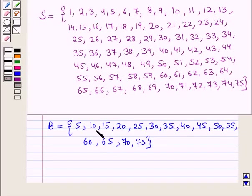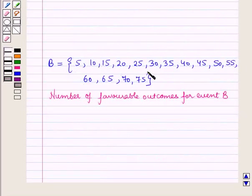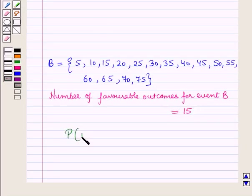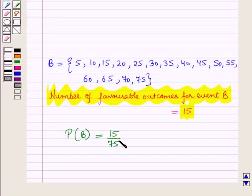Now let us write the number of favorable outcomes for event B. When we count the elements of set B, they are 15 in number. So the number of favorable outcomes for event B is 15. Therefore, probability of event B is equal to 15 upon 75, and since 15 × 5 = 75, this simplifies to 1 upon 5.